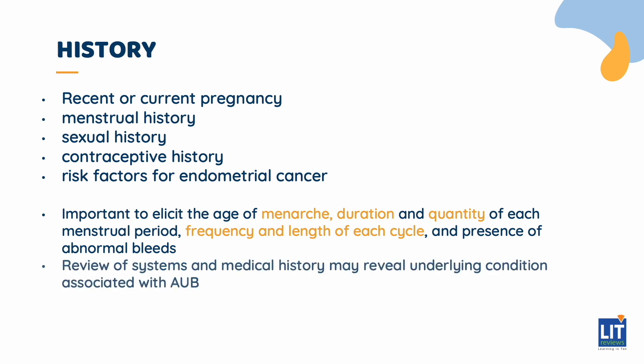A review of systems and medical history may reveal underlying conditions associated with AUB. Pertinent points include a detailed medication history, presence of bleeding or endocrine disorders such as polycystic ovarian syndrome.